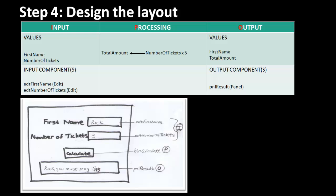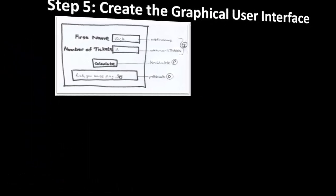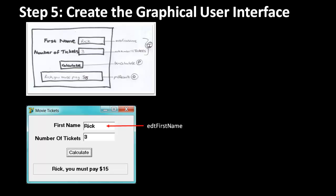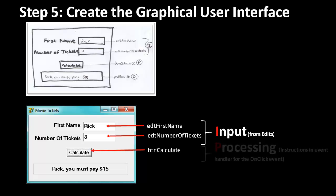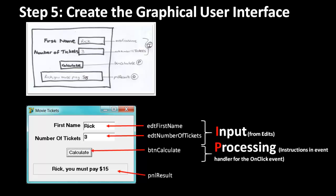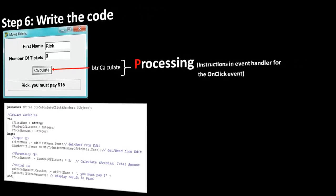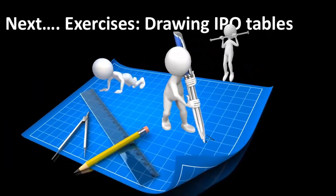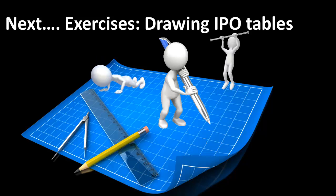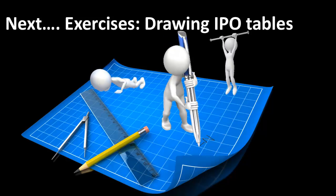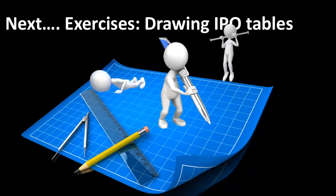The first four steps should really not take much of your time. The next step is to create the graphical user interface in Delphi's IDE. Finally, you will write code to implement the tasks and instructions. Throughout this chapter, we will implement our Delphi applications from our drawings and IPO tables. In the next video, I will give you a few problem statements. I want you to follow the same steps you learned in this lesson and try to create your own IPO tables and drawings. I will talk to you again in lesson 30.